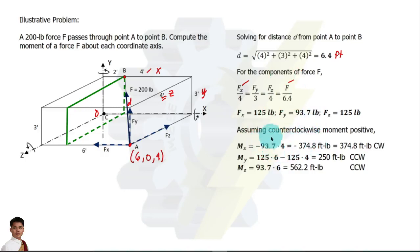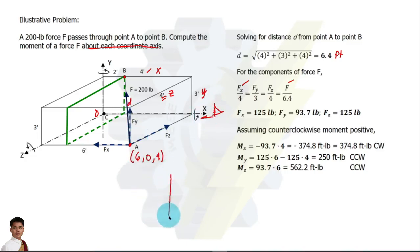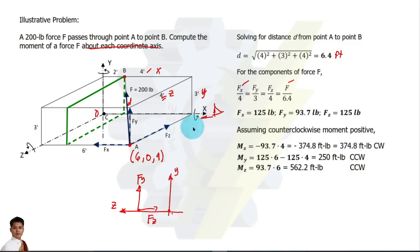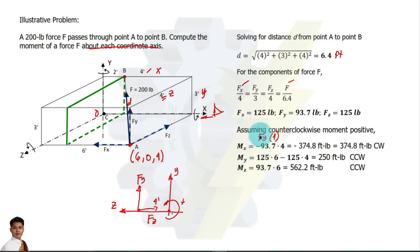For the moment about the x axis, we place our line of sight along the x axis and view the side, seeing the y and z axes. Assuming counterclockwise positive, Fy creates a clockwise moment — so it is negative — with moment arm equal to z, which is 4 feet. Therefore, the moment about x is negative Fy multiplied by 4, where Fy equals 93.7. We can now substitute to get the value.